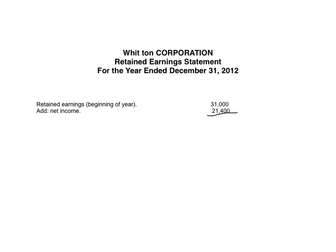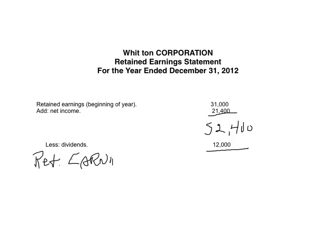To that we're going to add the net income, which is $21,400, giving us $52,400 as the total so far. Now we're going to subtract the dividends. The dividends were $12,000, so this gives us retained earnings at the end of the year. I subtract and have $40,400 — double underline. That's the amount of earnings kept by the company, but they belong to the shareholder.